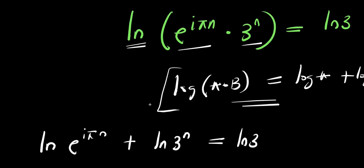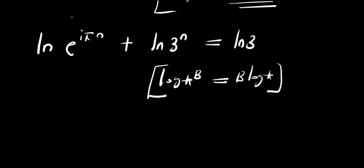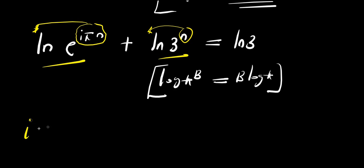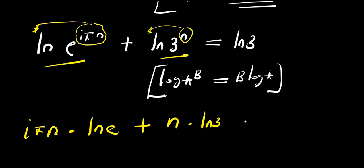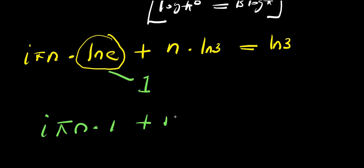Now the next thing we are going to do is to apply the logarithm power property: if you have log a to the power b, this equals b times log a. Applying this property to both terms, the n comes in front: we have i pi times n times ln of e, plus n times ln of 3, equals ln of 3. Now ln of e equals 1, so this simply becomes i times pi times n times 1, plus n times ln of 3, equals ln 3.